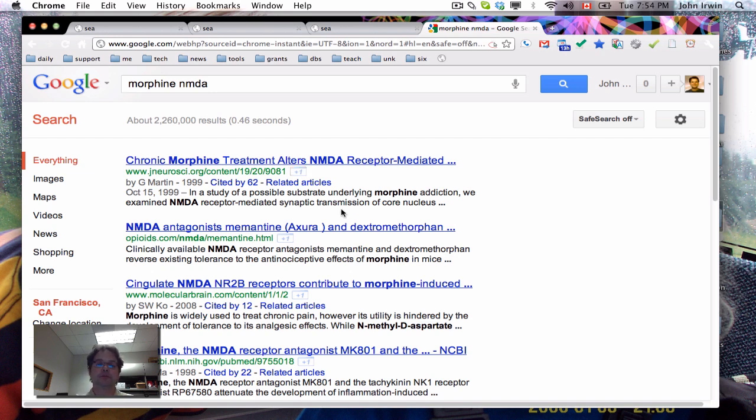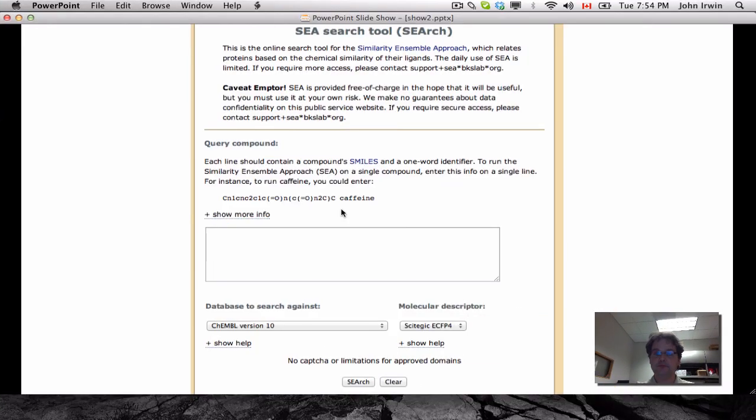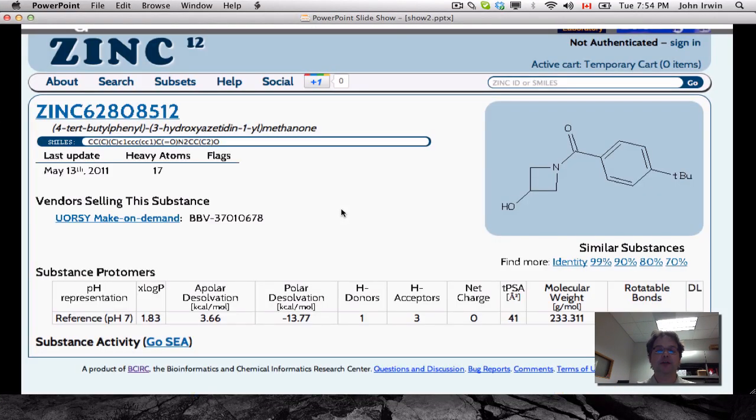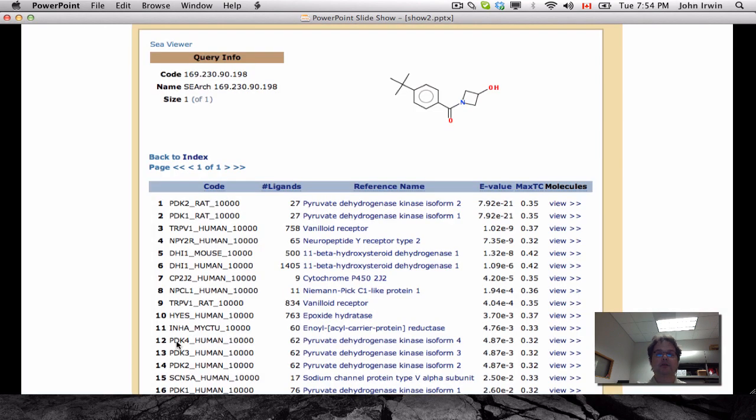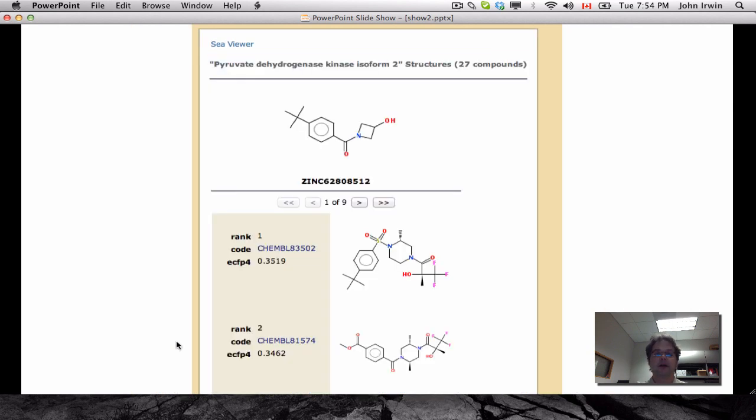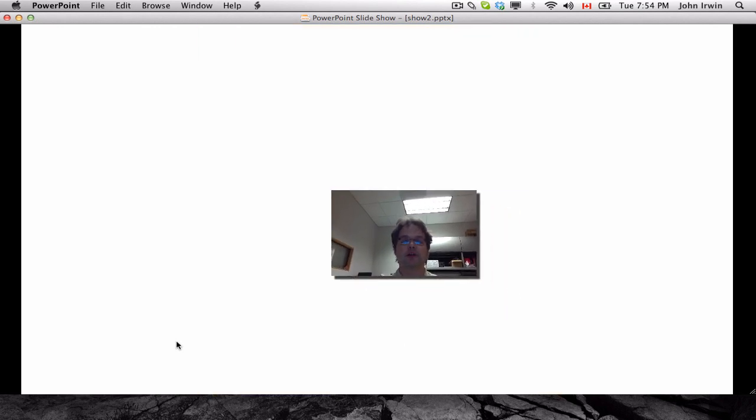Okay, so, what I would have liked to have shown you is that you can also use zinc. When you bring up a molecule in zinc, you can simply click on this Go SEA button here at the bottom, and then it will just take you directly into SEA, so you don't even need to, you know, copy-paste it over. You can just go directly there. And this is what I've shown you already for predictions.